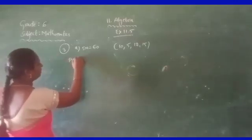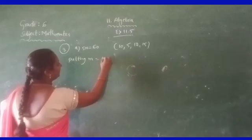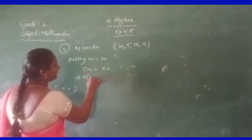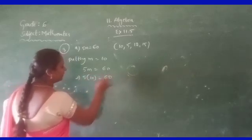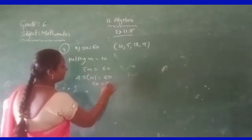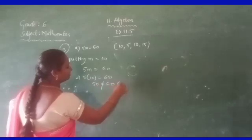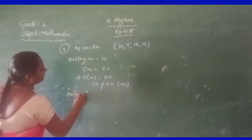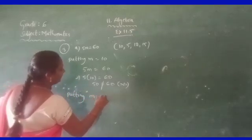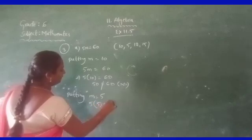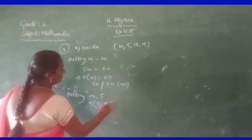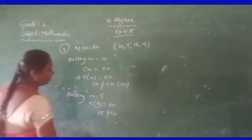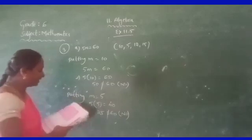Put M equal to 10: 5 times 10 is 50. Is 50 equal to 60? No, not the solution. Put M equal to 5: 5 times 5 is 25. Is 25 equal to 60? No, also not satisfied.